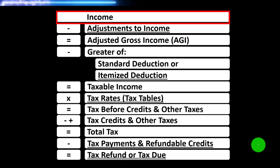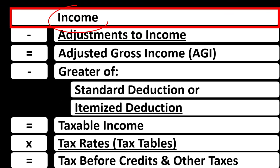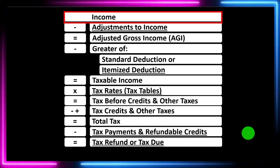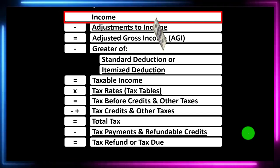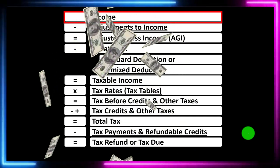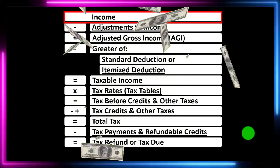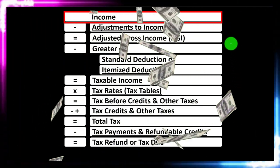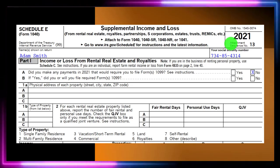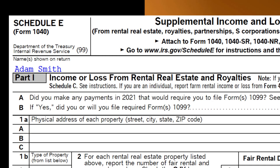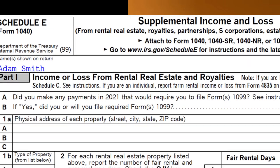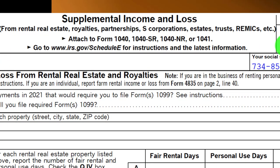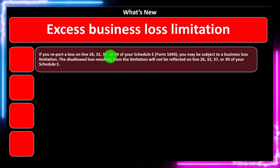Looking at the income tax formula at line one — income. We would typically have a supplemental schedule, that being an income statement with income and expenses. Expenses basically being deductions, and the net then rolls into line one income. We then have Schedule E, which is basically the income statement form — the supplemental income and loss — focused here on rental real estate.